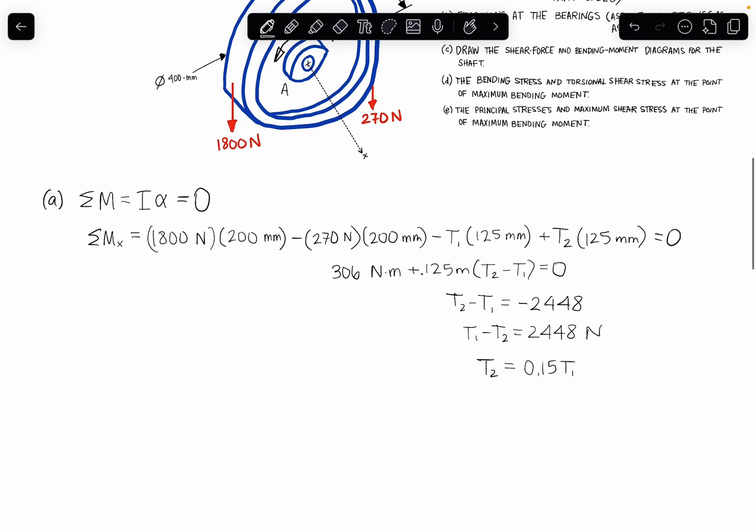So now let's plug this in, combine these two equations, we get that T1 minus 0.15 T1 is 2,448 newtons, and so T1 is going to be equal to 2,448 divided by 0.85, so T1 is 2,880 newtons.